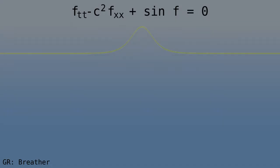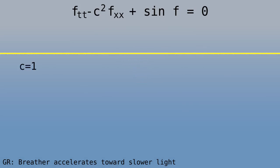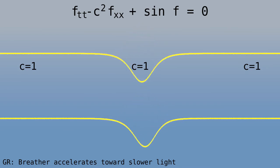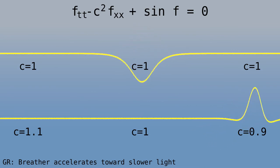The equation for the breather contains a constant C, which is the limiting speed of breather motion. If we make C vary, then a breather that is initially at rest starts to move in the direction of slower light, and the speed increases at a constant rate, that is, at a constant acceleration.